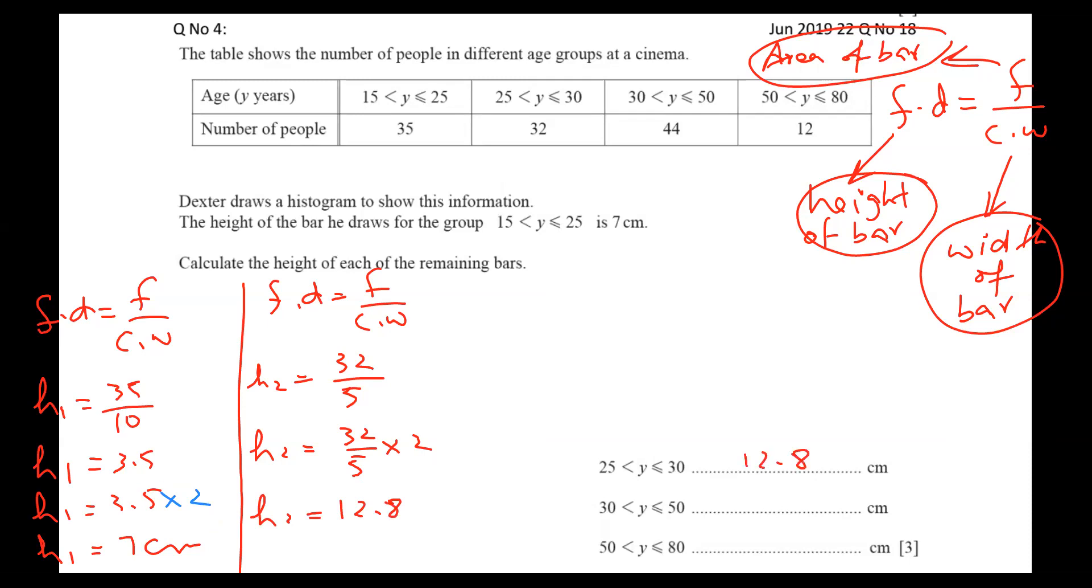Similarly, I'll go for column number 3. Frequency density equals frequency by class width. Frequency is 44, so 44 divided by class width means the difference of these numbers: 50 minus 30 becomes 20. But this is not our answer. After having this value, you will multiply into 2. And I'm getting 4.4 as the height of the 3rd column.